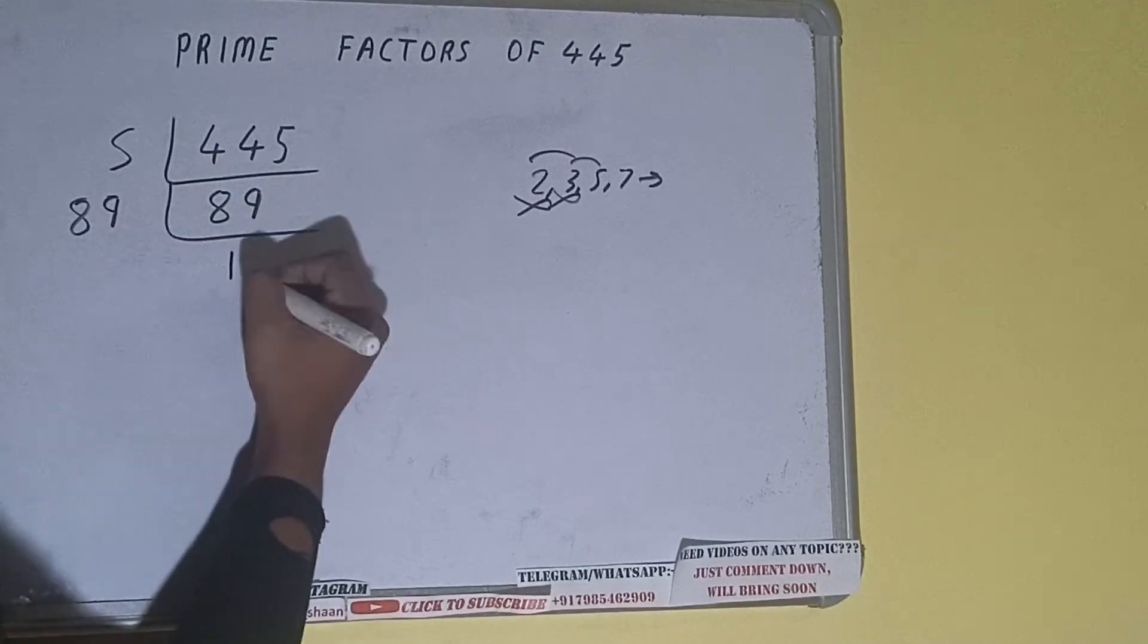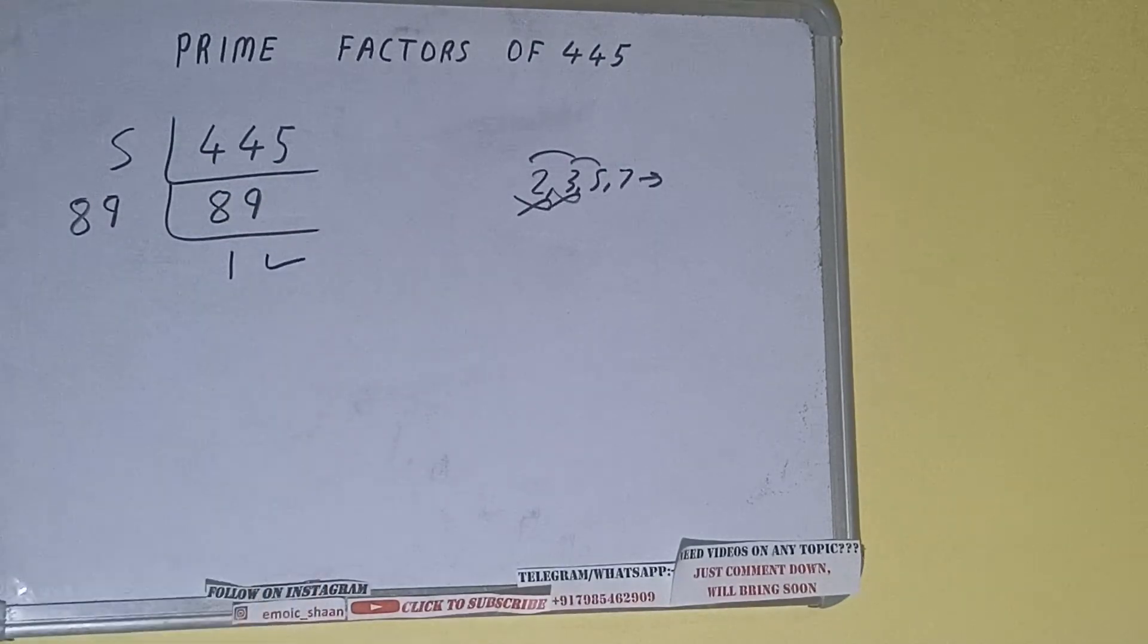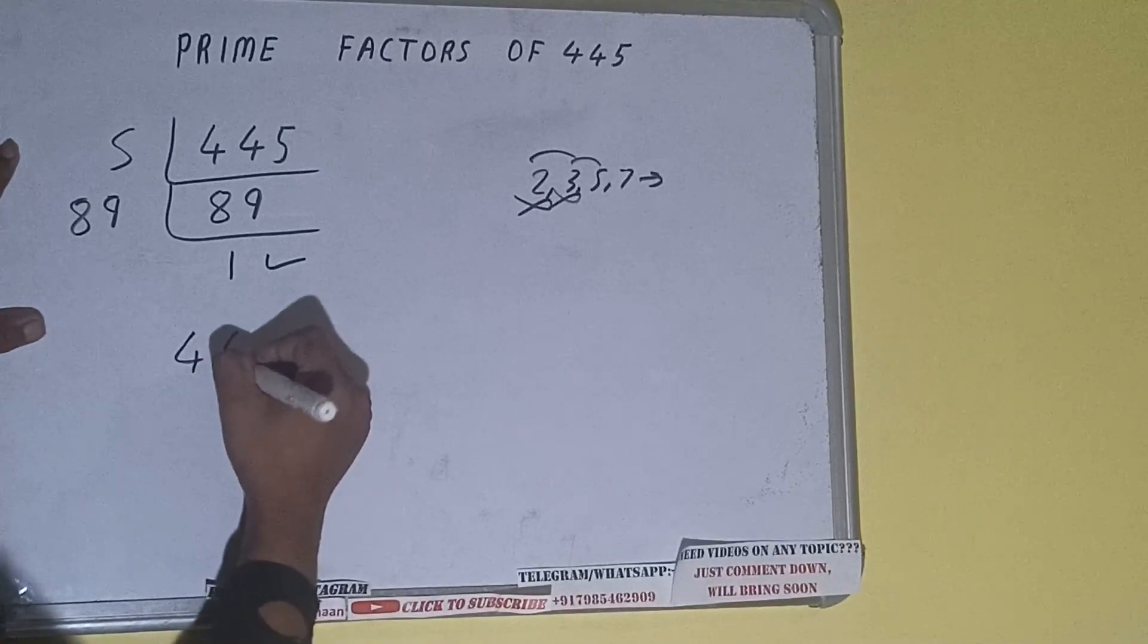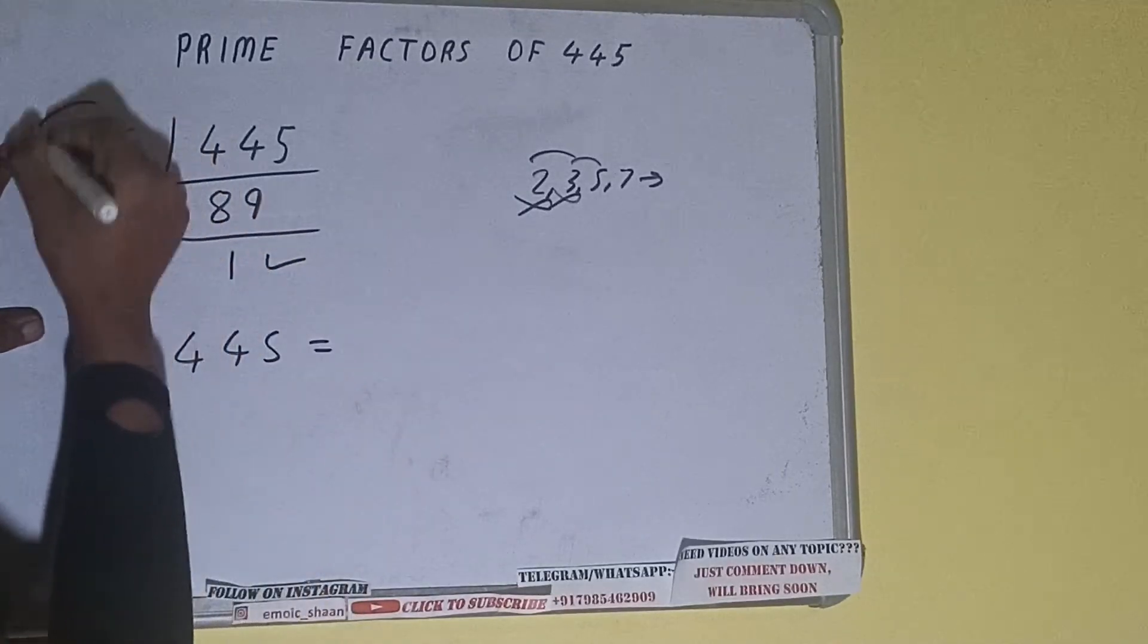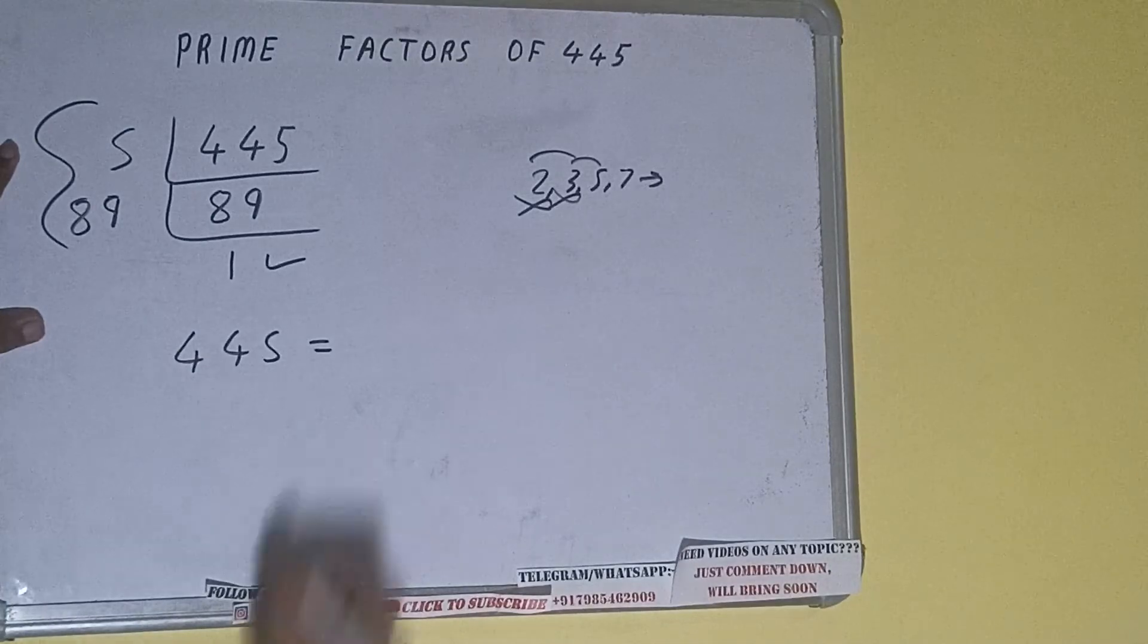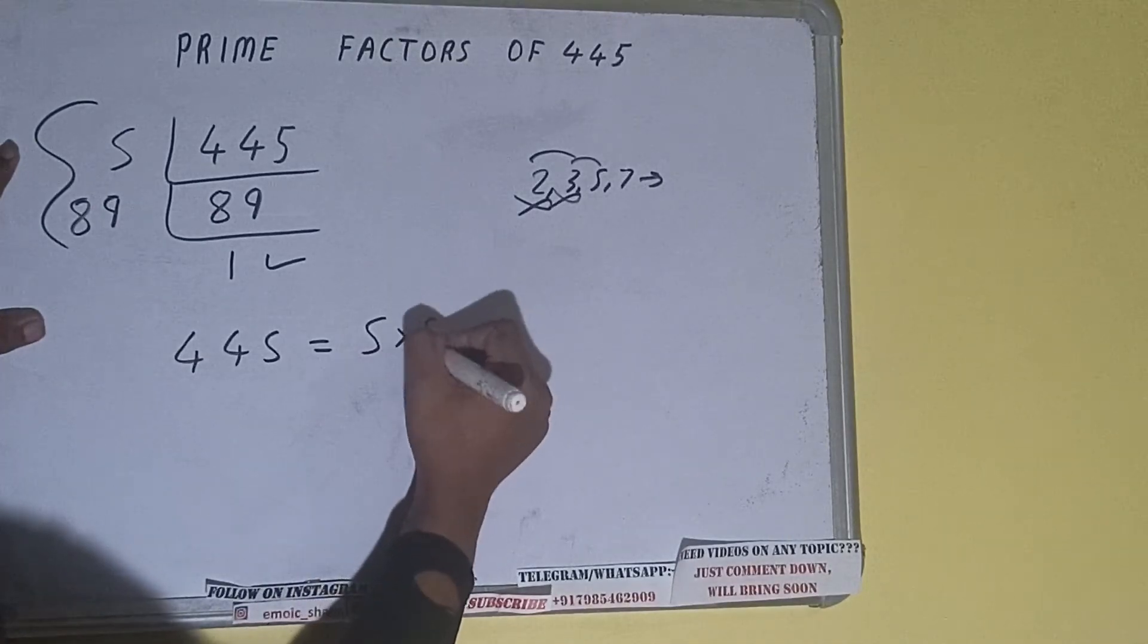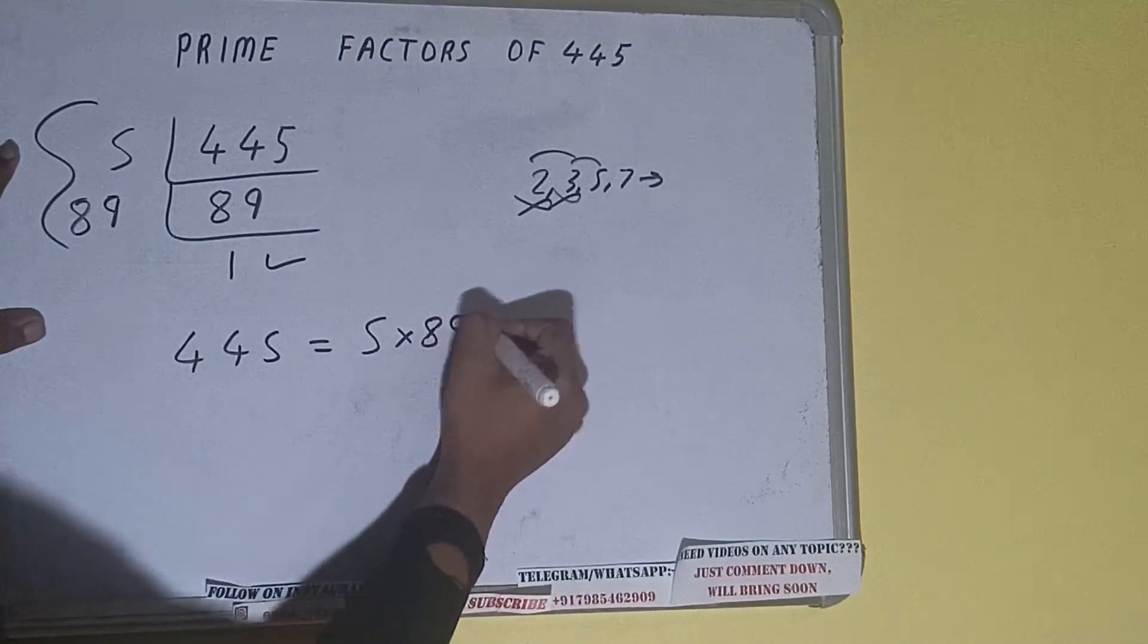Once we do so, we'll be getting one. Once we get one, we need to stop and do one last thing. That is, prime factors of 445 equals multiply whatever we have on the left-hand side. That is five times 89. That will be the answer.